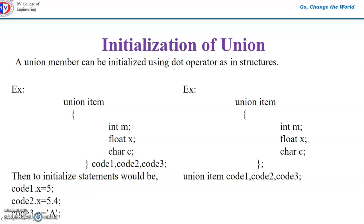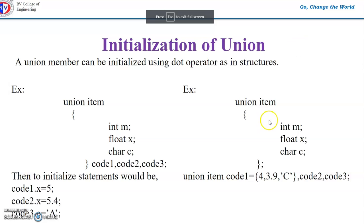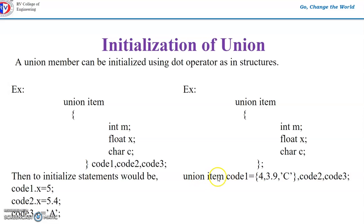Suppose I have the initialization of a union variable like this: union item { int m; float x; char c; }, and I declare union item code1 = { ... } using brace initialization. The first member must be the integer, the second float, and the last character. Only one member should be initialized. If you write all members, the value of m will be correct but the remaining values will be garbage — you can observe this when you print them.